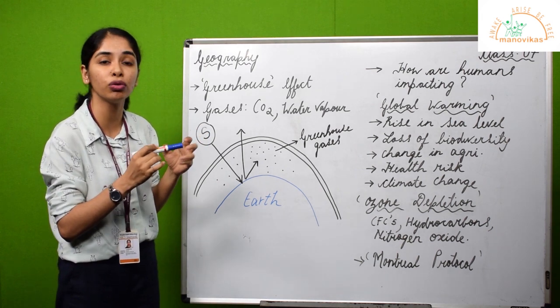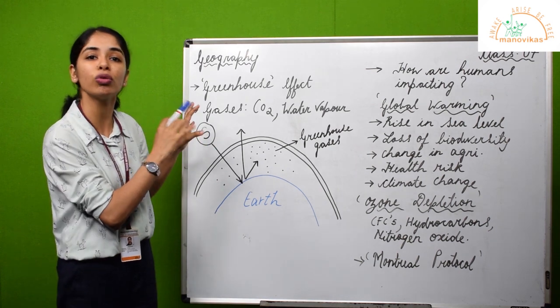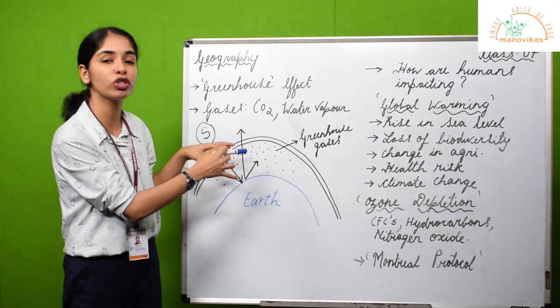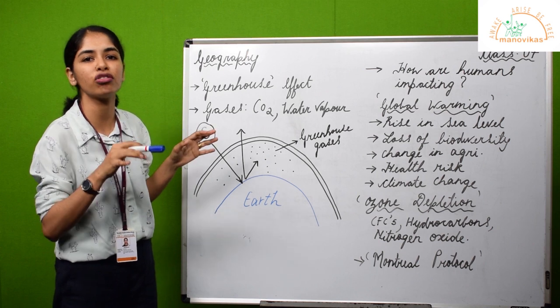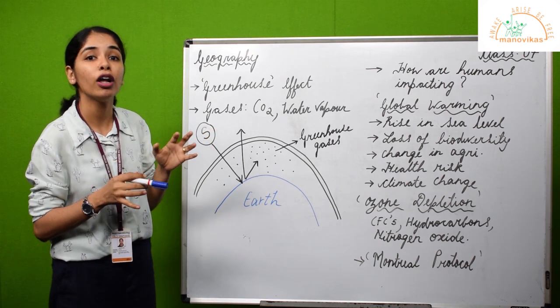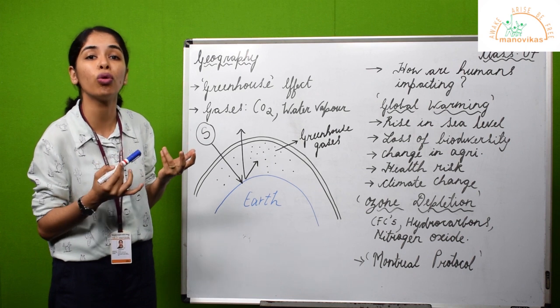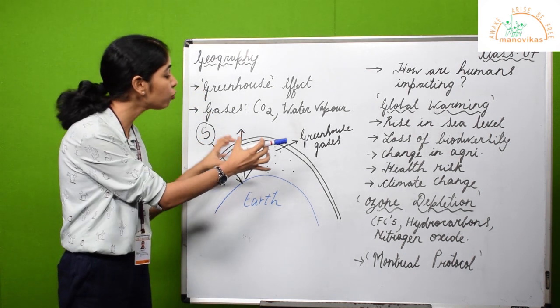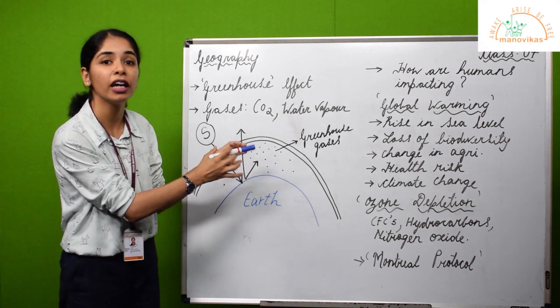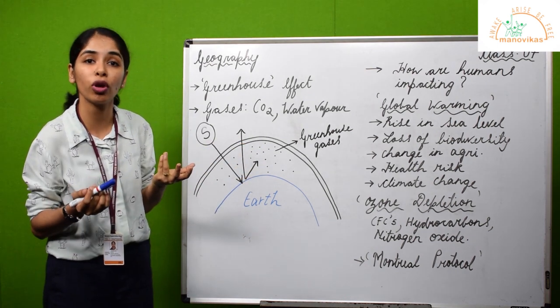At night when there is no sunlight, the heat which was captured throughout the day is slowly readily redistributed into the atmosphere, thereby not making the earth very cold or freezing at night in the absence of the sun. This heat which was trapped throughout the day makes life possible on earth even at night.